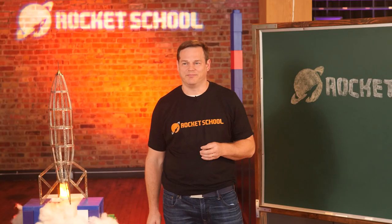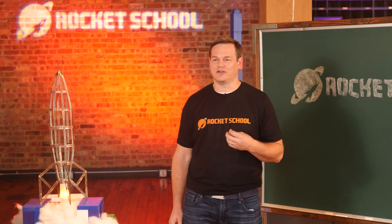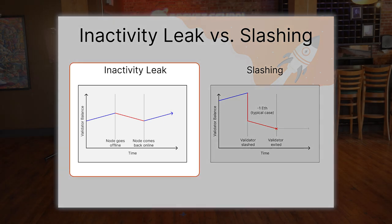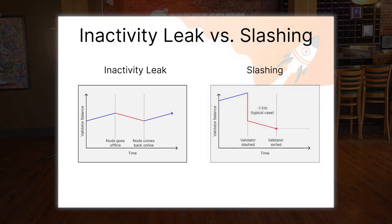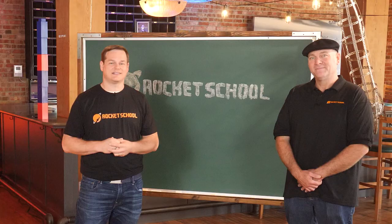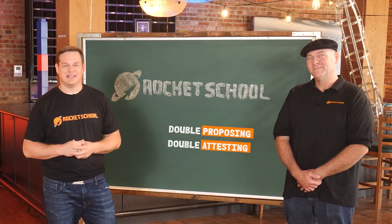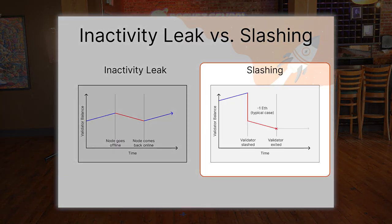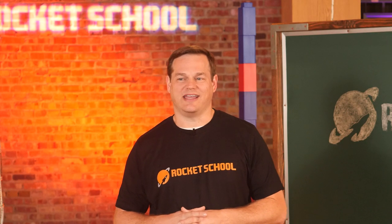Staking isn't risk-free. A node and its validators going offline is one possible mistake, but fortunately — and surprisingly for some people — the penalties for this are minor and only result in staked Ether slowly leaking away over time at roughly the same rate consensus rewards would have been earned. However, duplicating assigned duties, like double proposing or attesting, is seen by the Ethereum network as an attack even if it was just a mistake, and it's a major infraction punishable by slashing, resulting in the validator being ejected from the network.